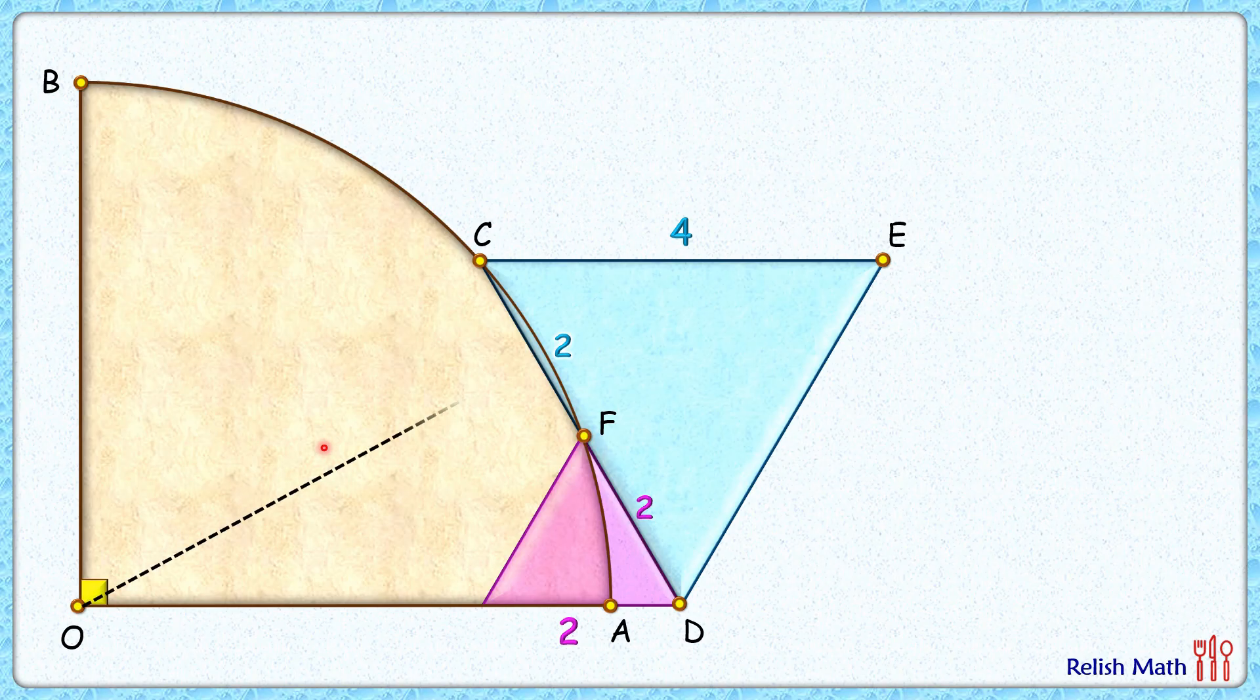From center O, let's drop a perpendicular on CF. If you notice, CF is a chord with respect to the circle. By theorem, the perpendicular drawn from the center of the circle bisects the chord, so the lengths CG and GF will be 1 centimeter each.